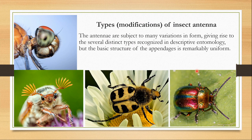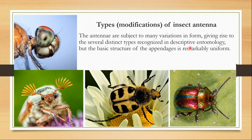Now, in different insects various types of antennae are found. Depending on the environment they live in or the purpose the antennae serve, there are many variations in form, giving rise to several distinct types recognized in descriptive entomology. But the basic structure of the appendages is remarkably uniform. So in all antennae I am going to show you now, there will be the scape, pedicel, and flagellum. The flagellum mainly shows many different types of modifications.